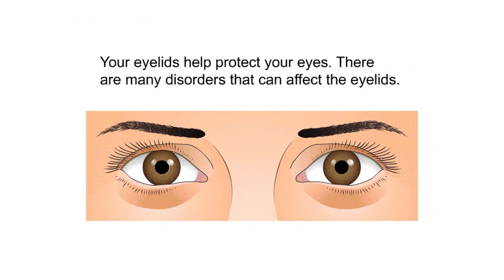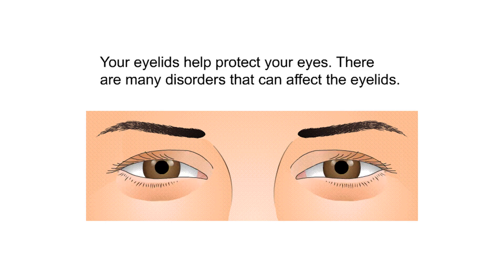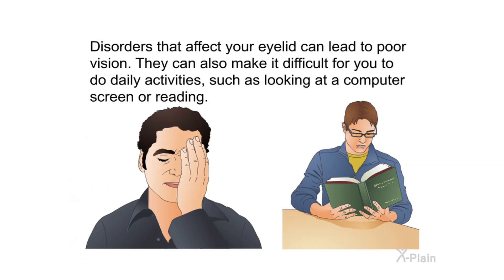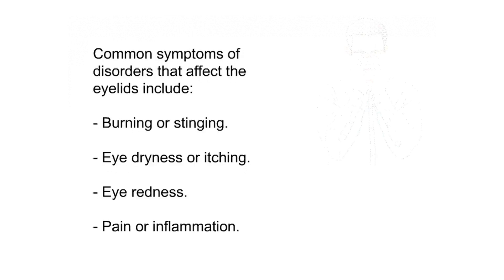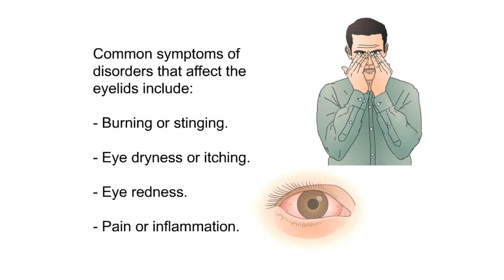Summary. Your eyelids help protect your eyes, and there are many disorders that can affect them. Disorders that affect your eyelid can lead to poor vision and make it difficult to do daily activities such as looking at a computer screen or reading. Common symptoms of disorders that affect the eyelids include burning or stinging, eye dryness or itching, eye redness, pain, or inflammation.